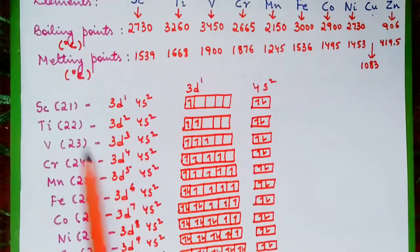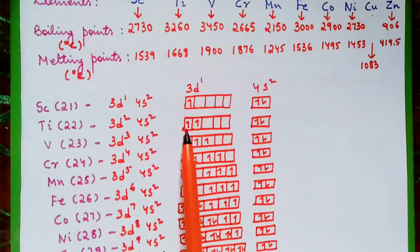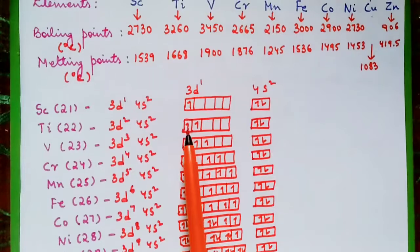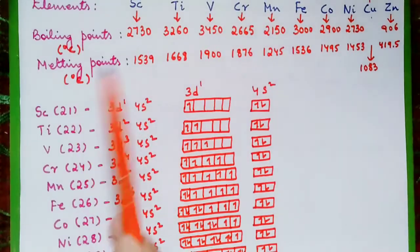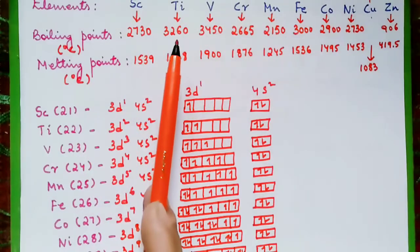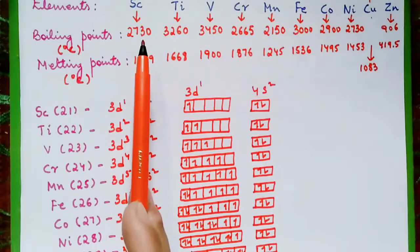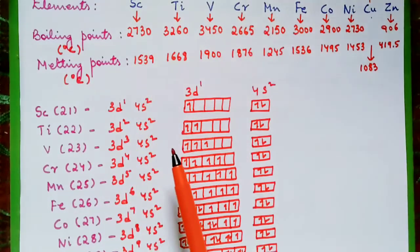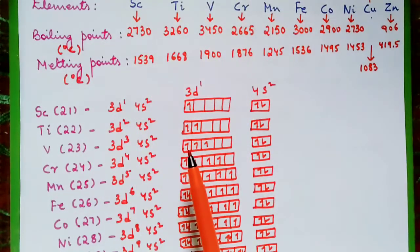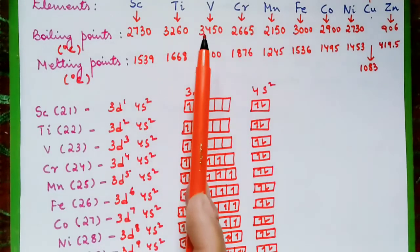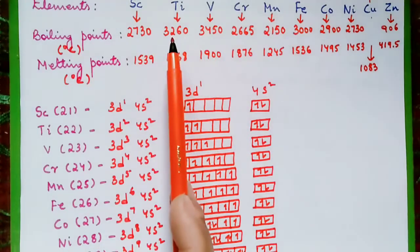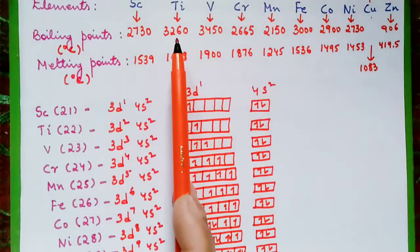Titanium has 2 unpaired electrons, so its boiling point is higher than that of scandium. Vanadium has 3 unpaired electrons, so its boiling point is higher than titanium's.